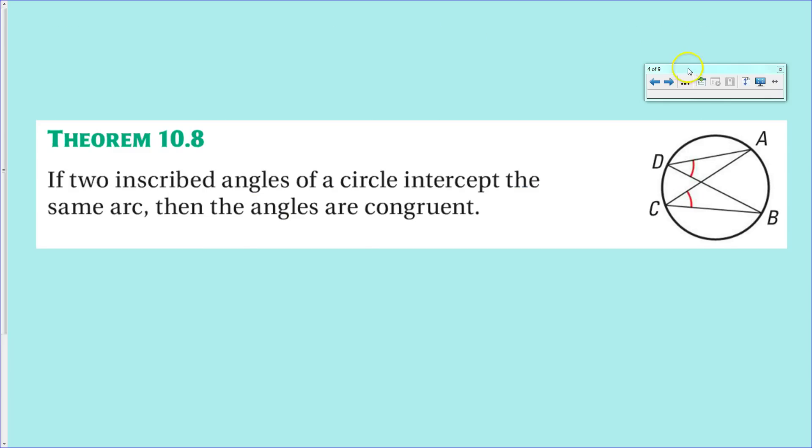On to the theorems. If two inscribed angles of a circle intercept the same arc, so the intercepted arc is the same for two inscribed angles, which is kind of difficult to imagine, but you can imagine that if I drag this point along the circle you could get two inscribed angles that have the same intercepted arc. If you have those two angles, those two angle measurements will be identical. They will be congruent.